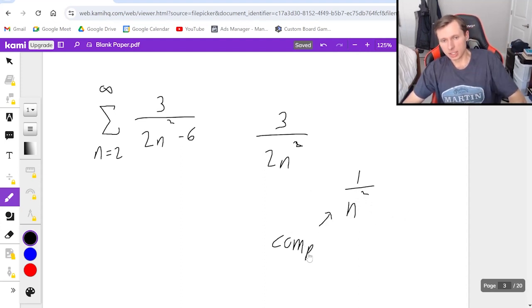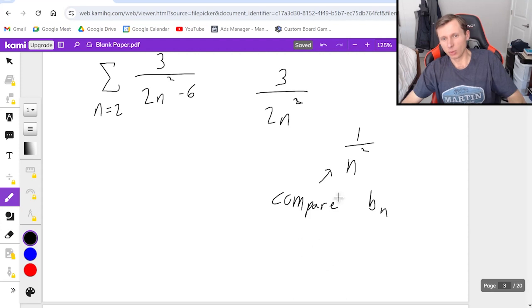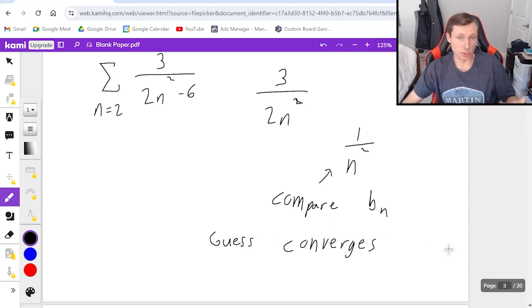So this is what I'm comparing it to. This is my b sub n, and I know 1 over n squared is a p series where p equals 2, so I know this series converges. So this is going to be my guess. My guess is converges this time.